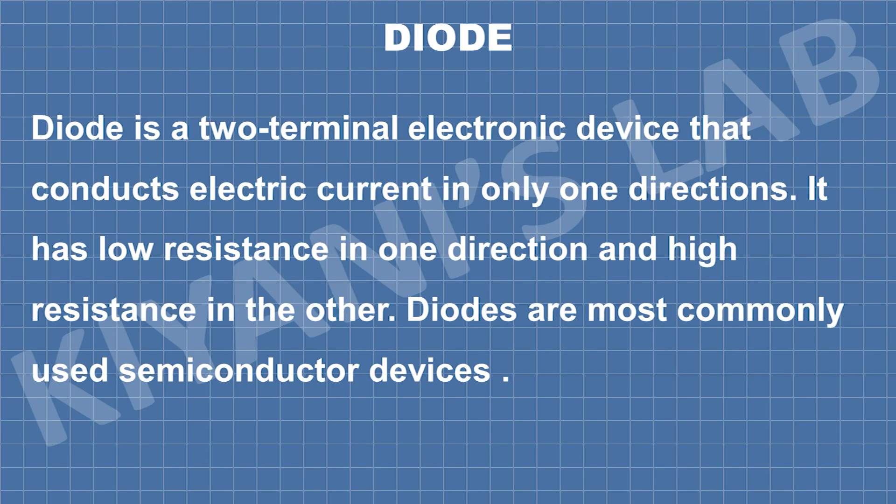Diode is a two terminal electronic device that conducts electric current in only one direction. It has low resistance in one direction and high resistance in the other. Diodes are most commonly used semiconductor devices.